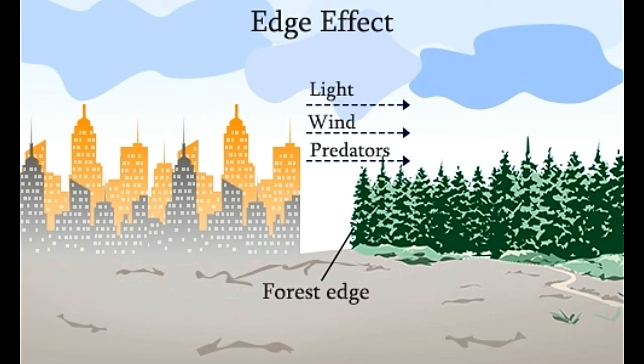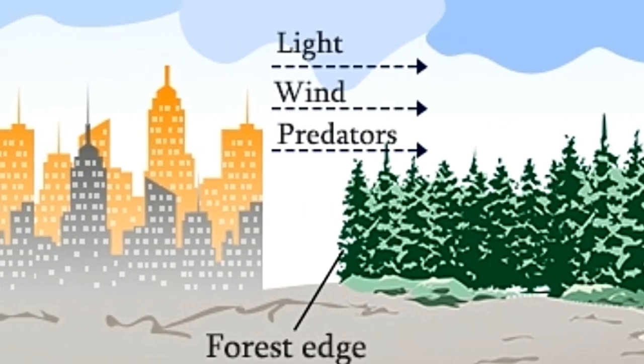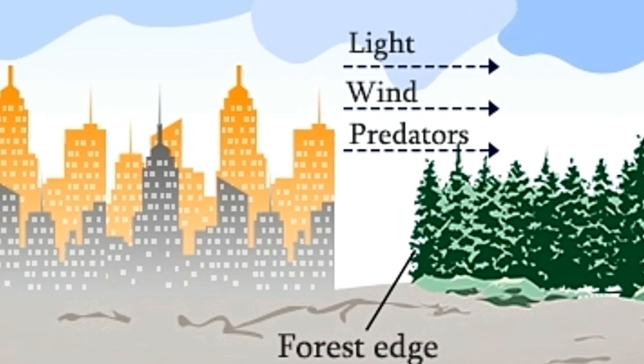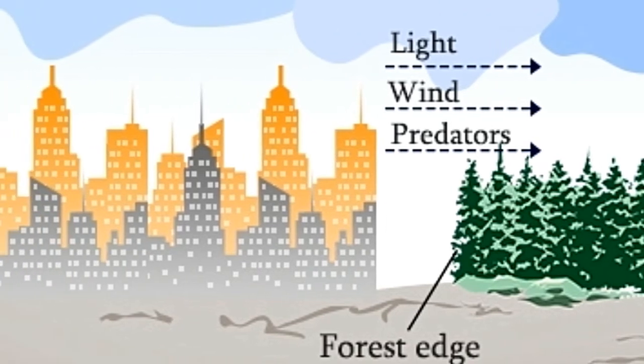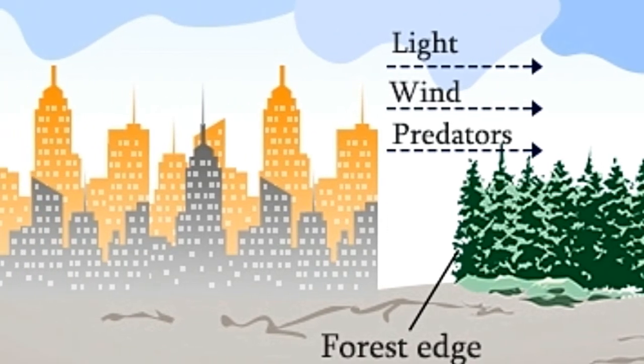Direct biological: These effects describe how organisms like plants and animals are directly affected by the physical effects introduced at the edge. These may include the enhanced growth of certain plants because of the extra sunlight, or the drying out of some trees which thrive in cooler conditions seen inside the forest.